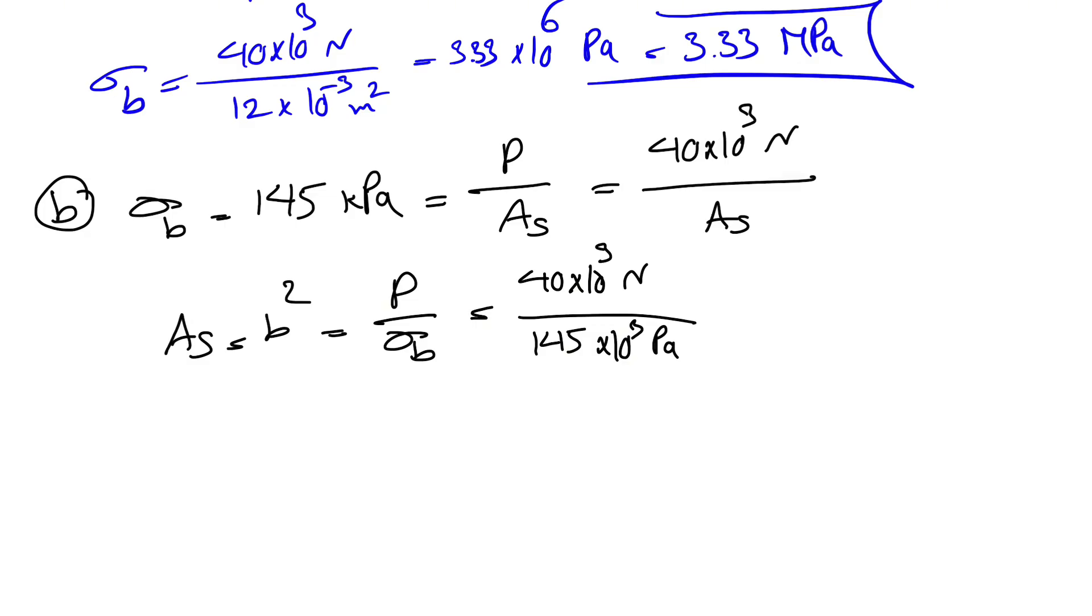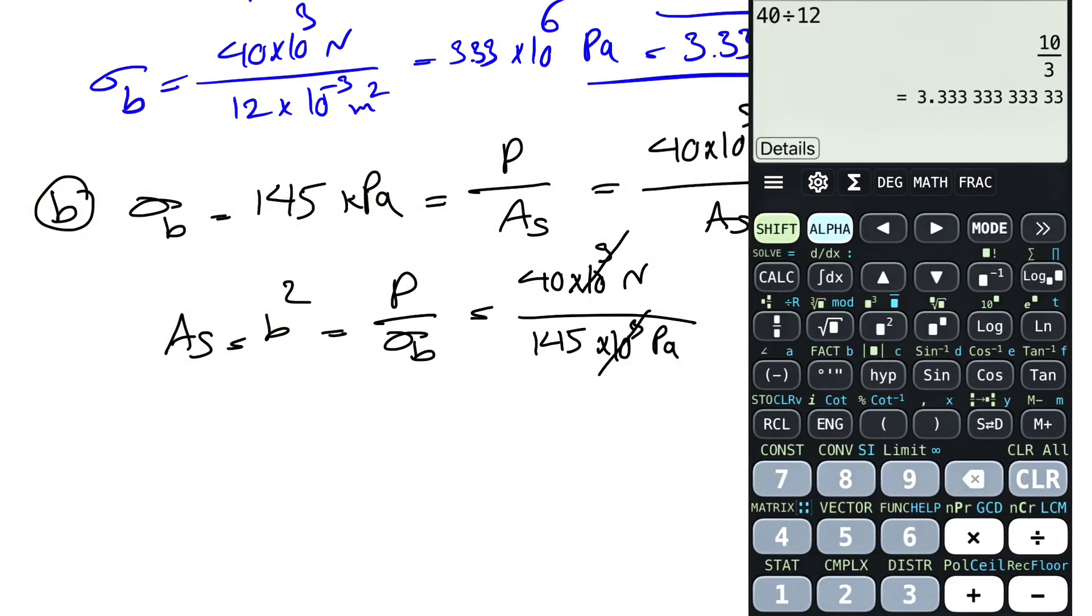That way, we can get our B squared in meters squared or our area in meters squared. So we can cancel out the 10 to the 3 and basically have 40 divided by 145. And our B squared will be 0.275.